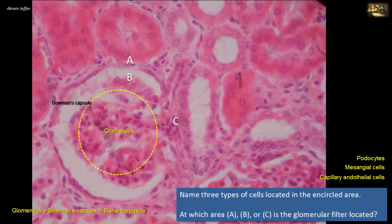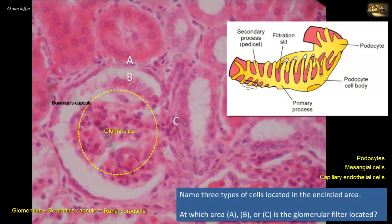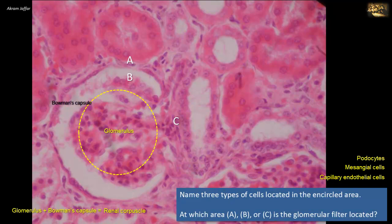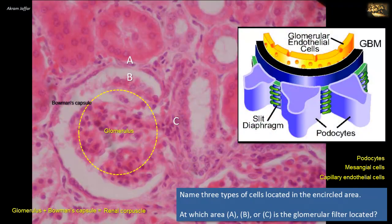The podocytes, as their name indicates, are cells that have extensive branching cytoplasm that can only be seen in electron microscopy. As for the second part of the question, the glomerular filter is structurally formed by capillary endothelium, which is fenestrated to permit the passage of all non-cellular elements of the blood. The second structural component of the glomerular filter is the capillary basement membrane.